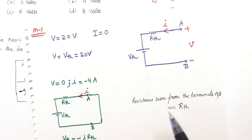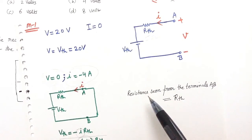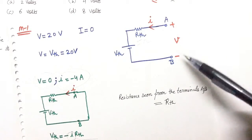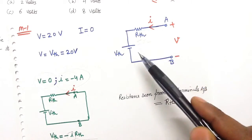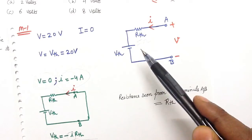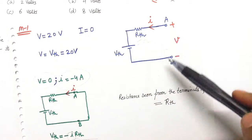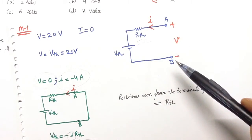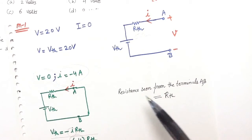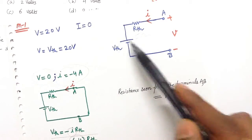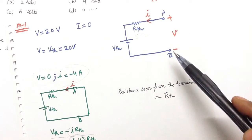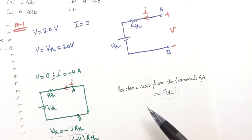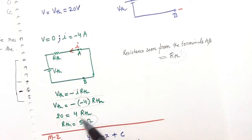We have been asked to find out the resistance seen from the terminals A and B. This means deactivate all the independent sources and find the equivalent resistance across the terminals A and B. So if this VTH is deactivated, then the equivalent resistance across A and B points will be RTH, and the value of RTH is 5 ohm.